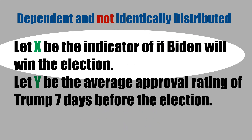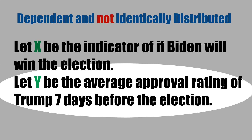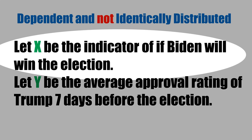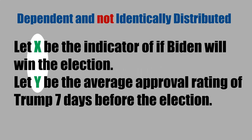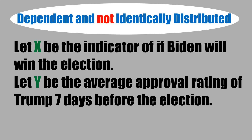Now let x be the indicator of whether Biden will win the election, and let y be the average approval rating of Trump seven days before the election. x is a discrete random variable — one if Biden wins, zero otherwise. Approval rating is a continuous variable ranging from zero to one hundred percent. Information about y is helpful to predict x, and x and y do not have the same probability mass function since one variable is discrete and the other is continuous. Therefore, they are dependent and not identically distributed.